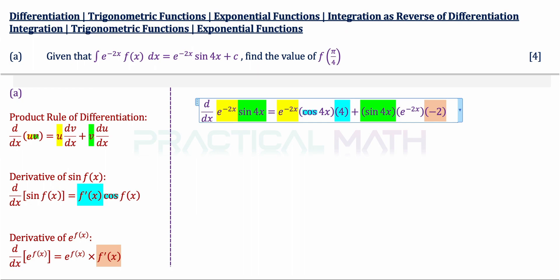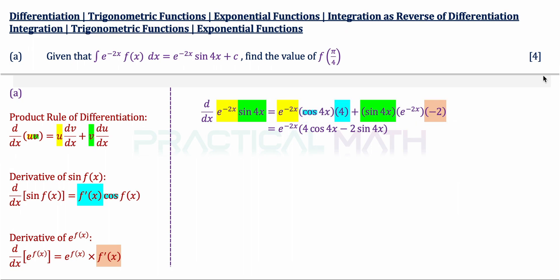So this is after we use the product rule of differentiation. We can then proceed to the next step, which is to factor out e to the power of negative 2x from this expression. Factoring out e to the power of negative 2x, we open a bracket: the first term within the bracket is 4 cos 4x and the second term is negative 2 sin 4x. Close bracket. We have successfully differentiated this part.